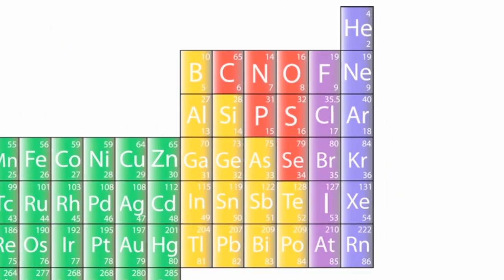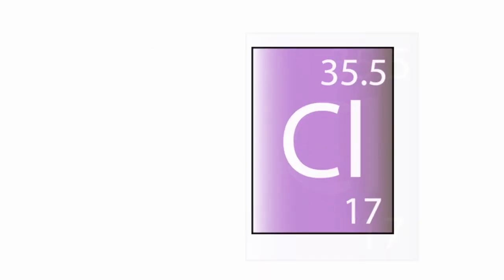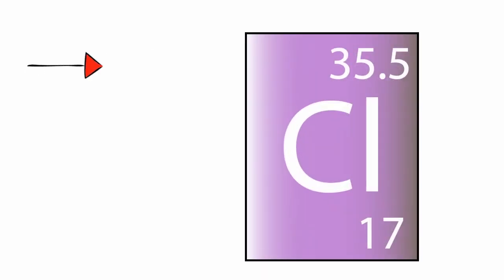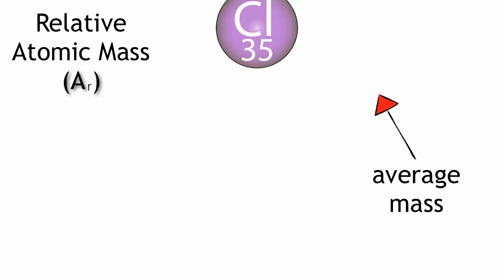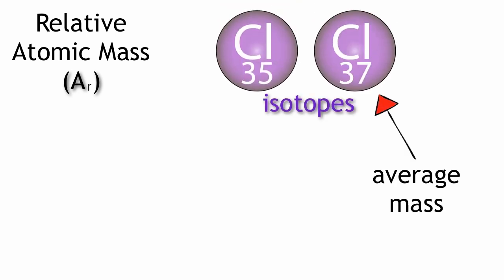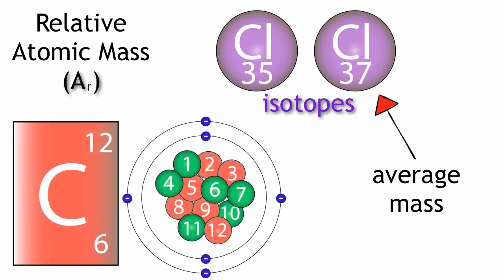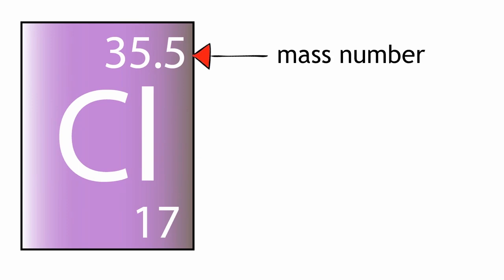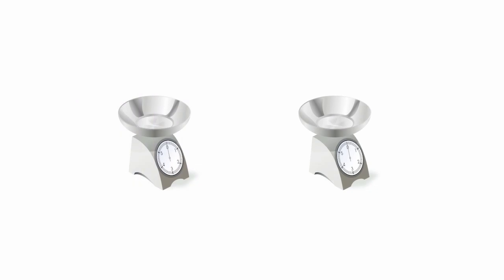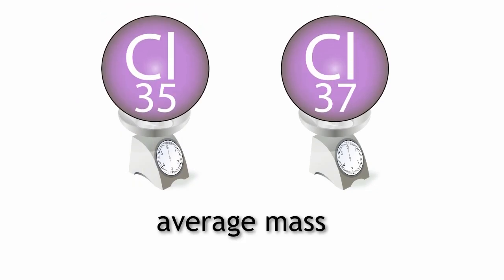The isotopic mass is not the mass number which appears on the periodic table. The number seen on the periodic table is the relative atomic mass, or the Ar. The relative atomic mass of an element is defined as the average mass of the naturally occurring isotopes of the element relative to the mass of an atom of carbon-12. In basic terms, it is the average mass of the isotopic forms of the element.